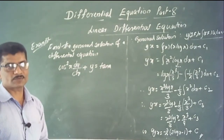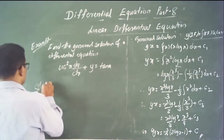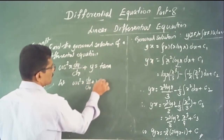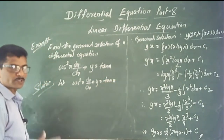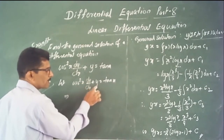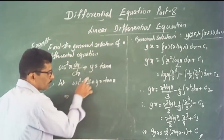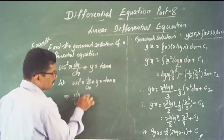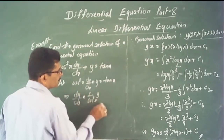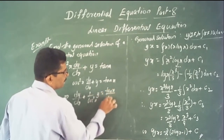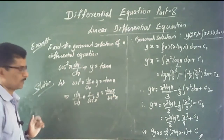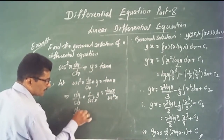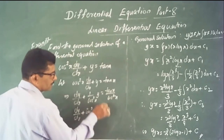The solution is very simple. The given differential equation is cos²x · (dy/dx) + y = tan x. Rewrite in standard form — make the coefficient of dy/dx unity by dividing by cos²x: dy/dx + sec²x · y = tan x · sec²x. This is in the form dy/dx + P·y = Q.